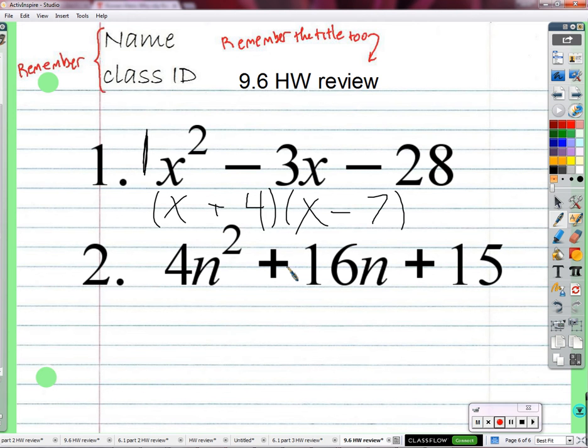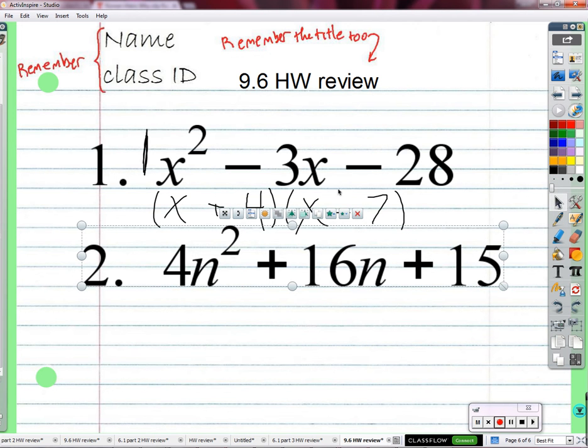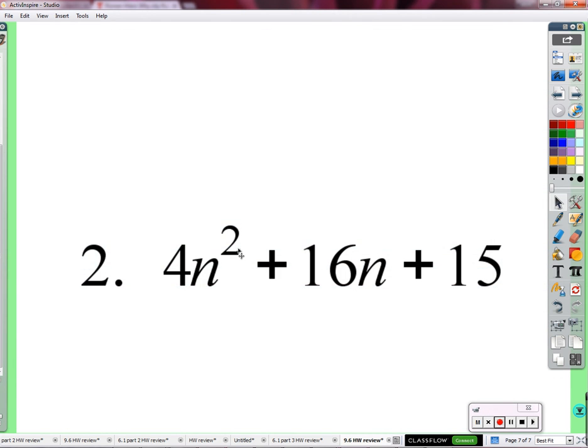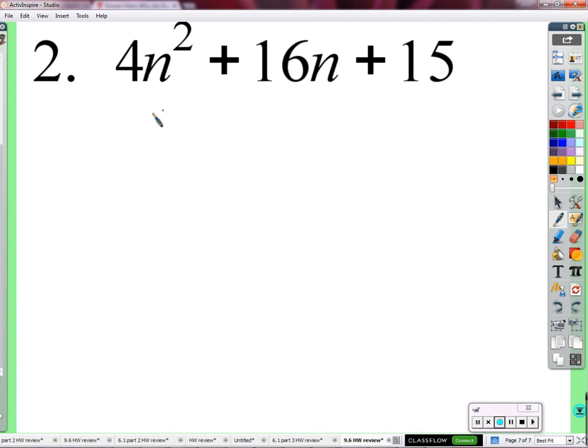4 times negative 7, negative 28. So that went in there as just a throwback to old school easy, I would say. Easier than this is. Let's take this one.